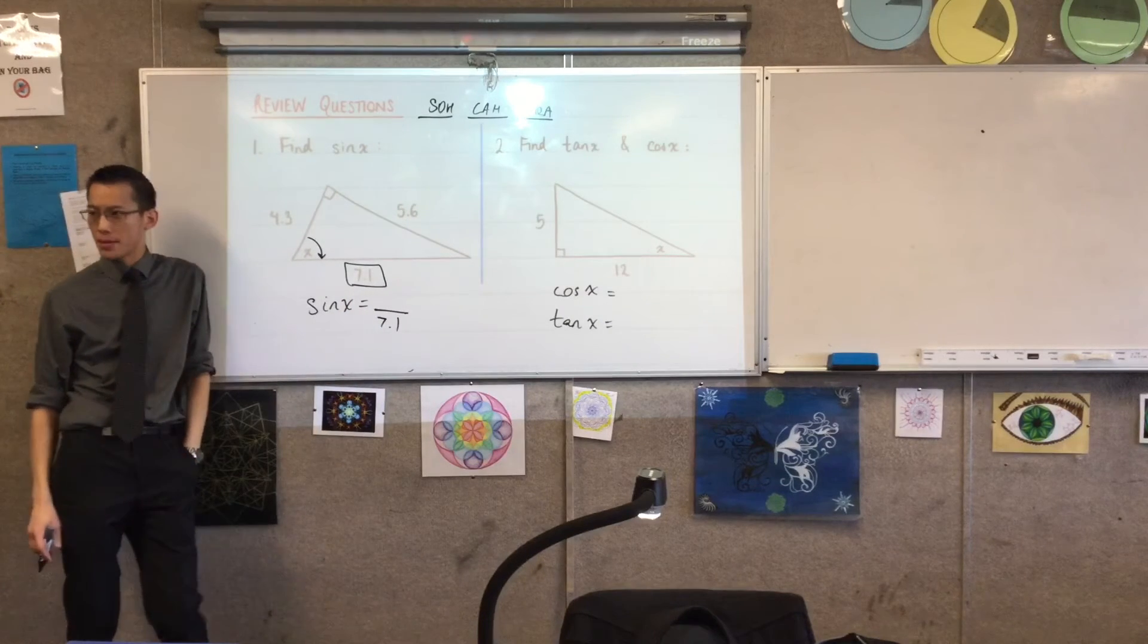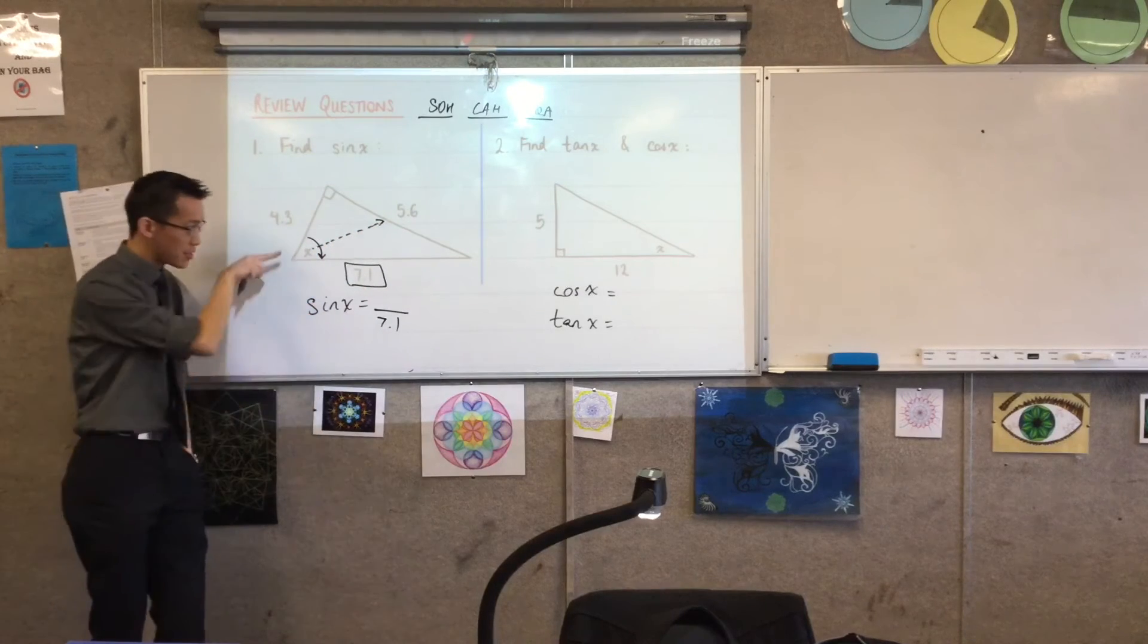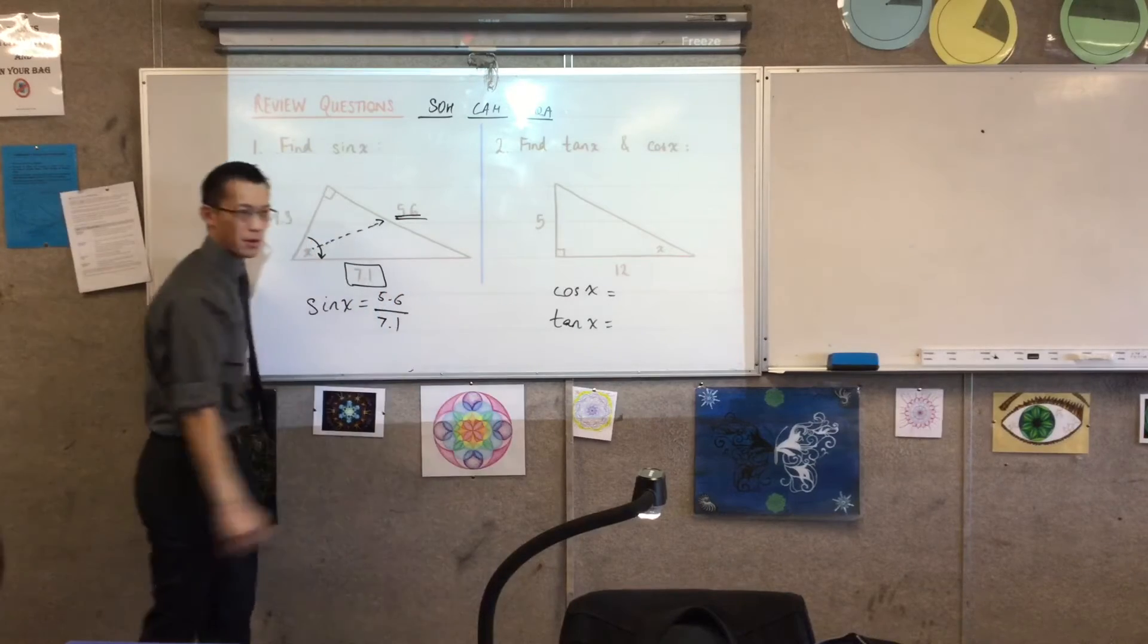Which side is opposite the angle? And you can see, I often actually draw a line across, right? So you can see, I'm looking on the opposite side. 5.6 is going to be the number.